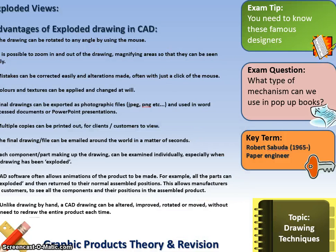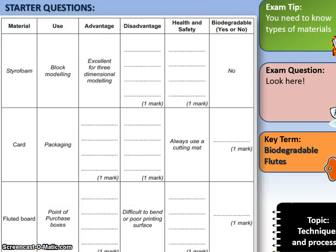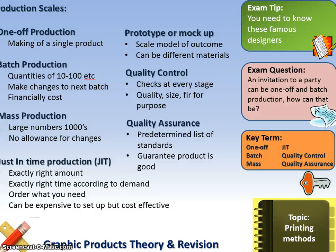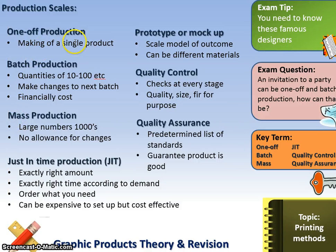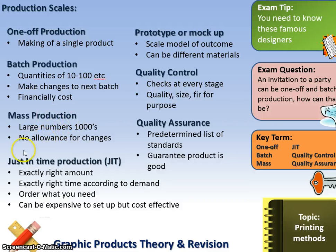Types of production: one-off production is a single item. Batch production involves small quantities, typically 10 to 100 — you can make changes between batches but it is quite expensive. Mass production is done in thousands and allows no allowance for changes, since so much has already been produced.